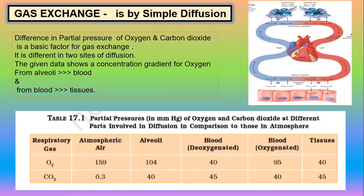Next, gas exchange at the tissues. For the heart, the blood vessel involved is the pulmonary artery with deoxygenated blood. The gas exchange is possible from the alveoli to the pulmonary blood vessel — that is oxygen diffusion into the blood vessel.